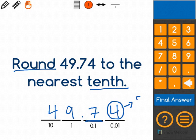With rounding, if the number is five or above, then that means we round up. If the number is four or below, that means we keep the number what it was.